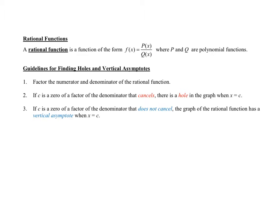How do I find holes and vertical asymptotes for rational functions? Step one: factor the numerator and denominator of the rational function. Step two: if c is a zero of a factor in the denominator that cancels out, there is a hole in the graph when x equals c.